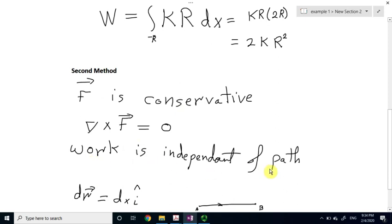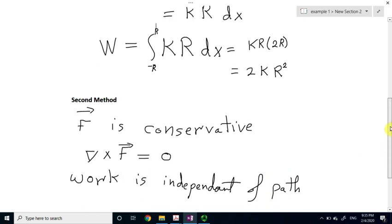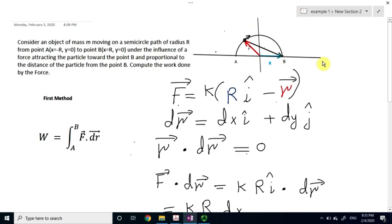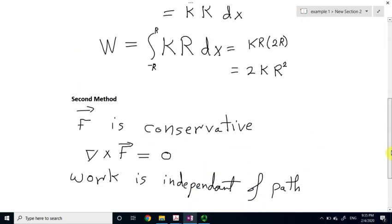So, no matter what path you take from point A to point B, the answer will always be the same. Because of this, we can now change the path, and we can take a simpler path from A to B directly, and that's along the diameter of the circle, which means we're going to move along the x-axis only. So, this will simplify lots of things.